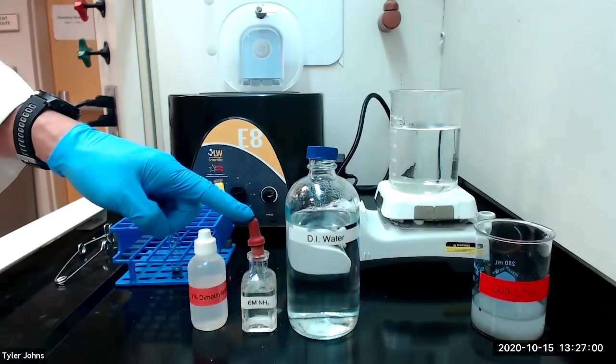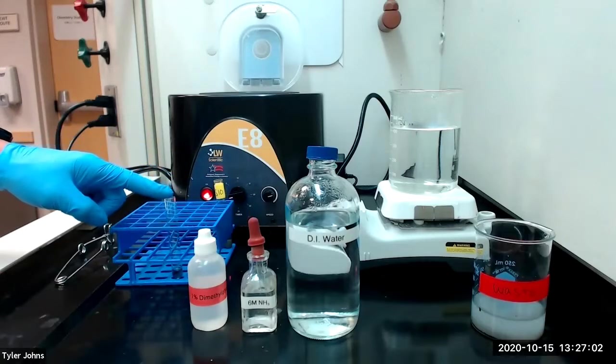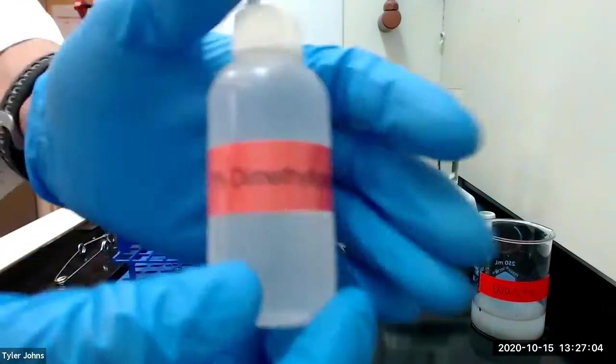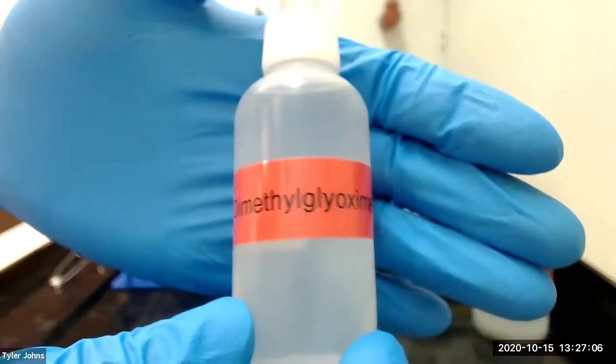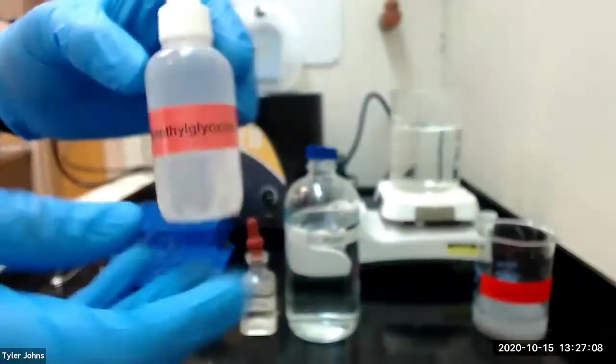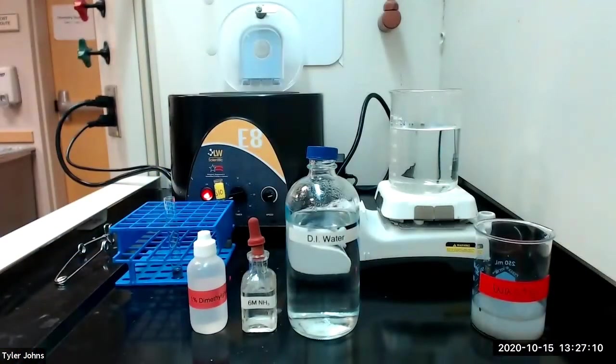We'll next add six molar ammonia to make the solution basic. We'll then add two to three drops of 1% dimethylglyoxime to test for the presence of nickel two ion.